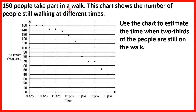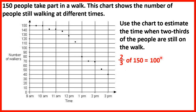150 people take part in a walk, and a chart shows the number of people still walking at different times. We need to estimate the time when two-thirds of the people are still on the walk. Two-thirds of 150 is 100, because 150 divided by 3 is 50, times 2 is 100. So we need to find the time when 100 people are still walking.